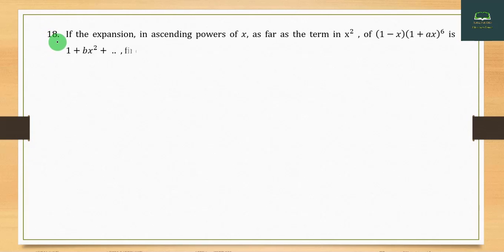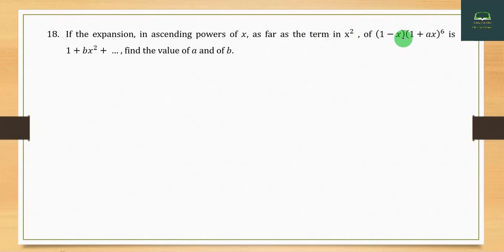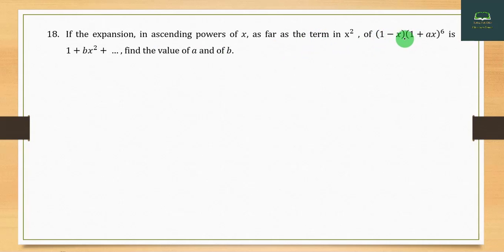Question number 18: In the expansion to the power of x⁴, given (1-x)² times (1+ax)⁶ equals 1 + bx + and so on, find the value of a and the value of b. Then find the value of a and the actual value of a squared.